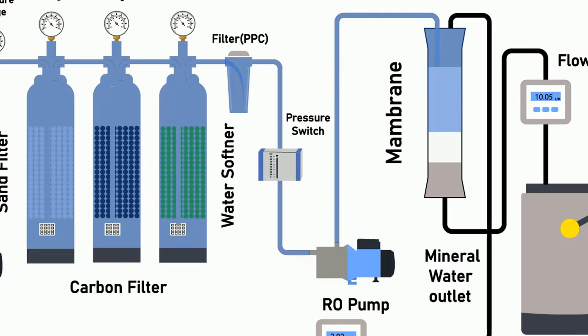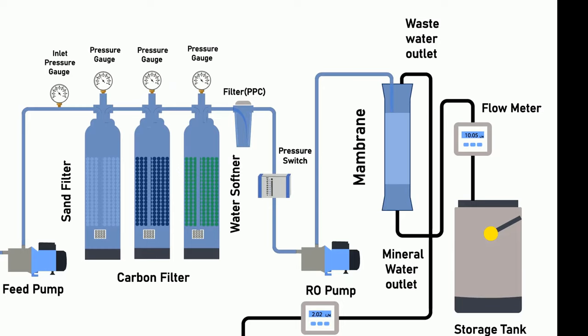The RO pump moves water through the membrane filter with very high pressure and removes all the dissolved substances from it. The mineral water comes out from the bottom and the raw water or waste water is collected from the top.